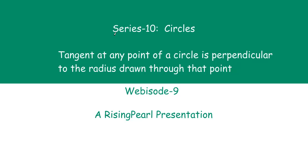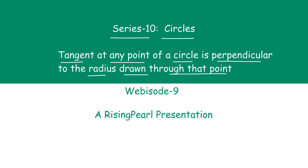Hello friends, welcome to risingpearl.com. Today we are talking about series 10 on circles. This is Revision number 9 and today's topic is the theorem that states: the tangent at any point of a circle is perpendicular to the radius drawn through that point. This is going to be a super important theorem when it comes to circles and tangents, so you absolutely want to make sure that you understand what the theorem is and how we prove it.